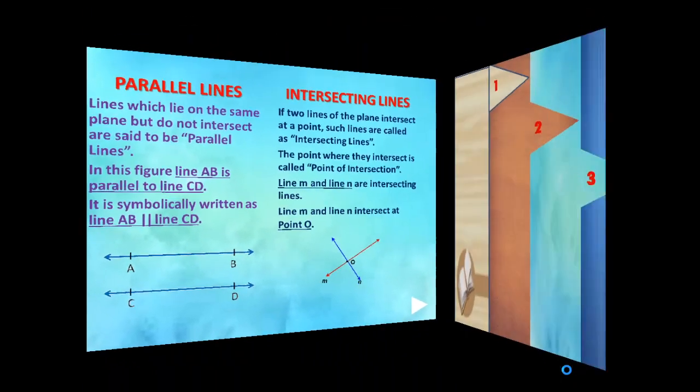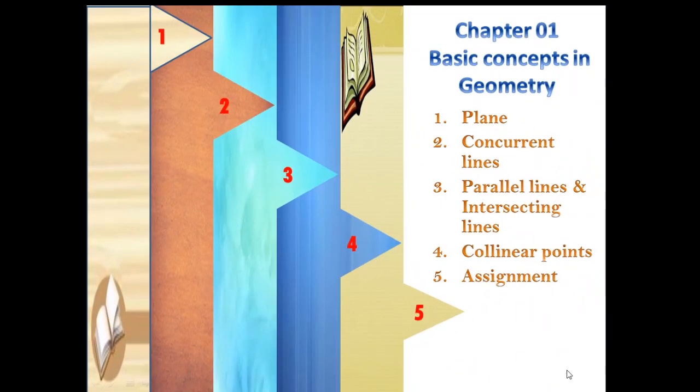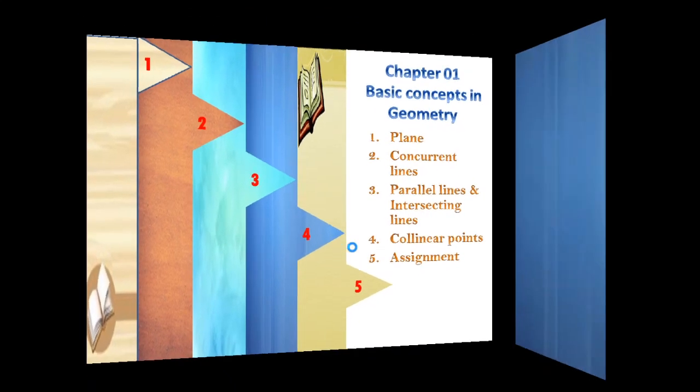Line M and line N intersect at point O. This completes our topic of parallel lines and intersecting lines. Next, we come to collinear points, the last topic of this lesson.